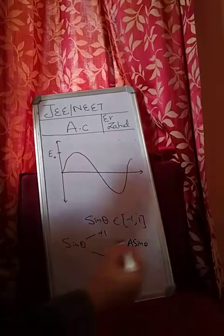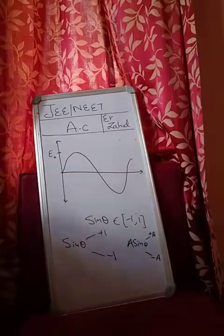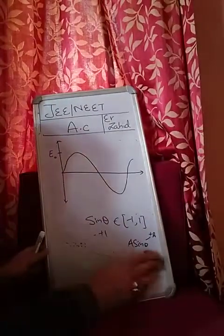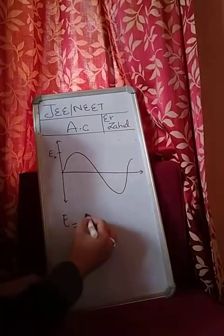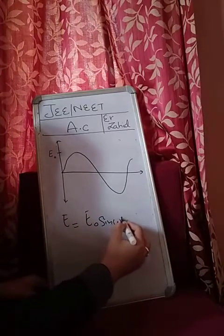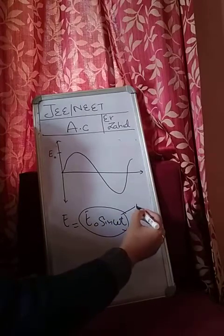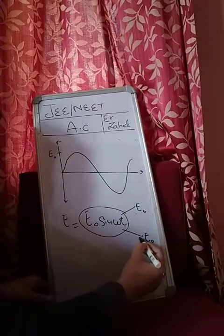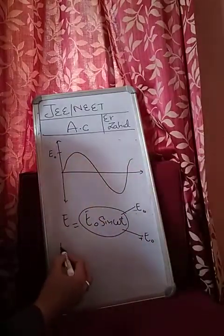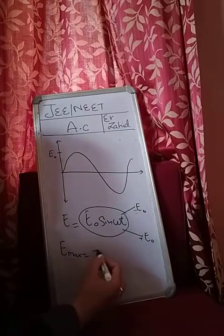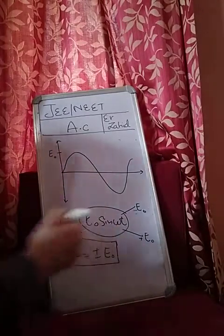If A sine theta, it will be plus A and minus A. This is what is here. Here is E is equal to E naught sin omega t. So E naught sin omega t, then its value is bounded between plus E naught and minus E naught. We can write E max as plus minus E naught. That's what we call the peak value.